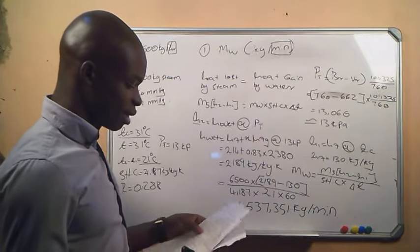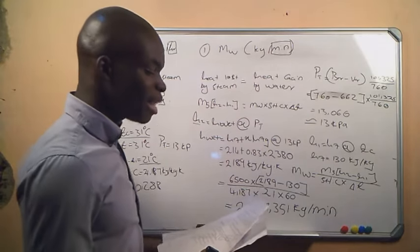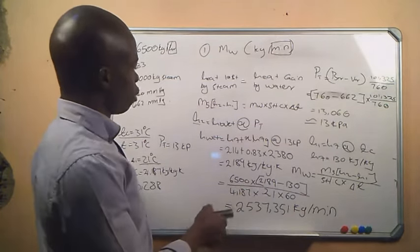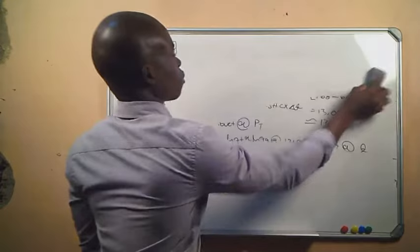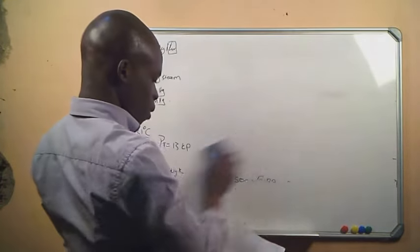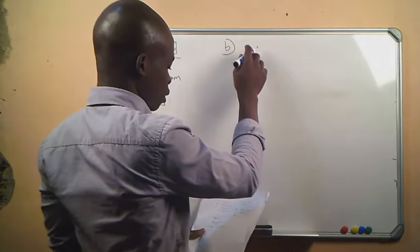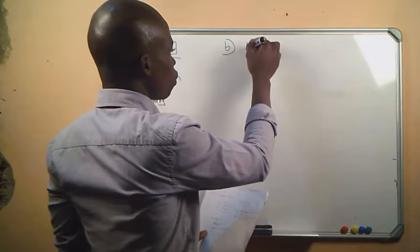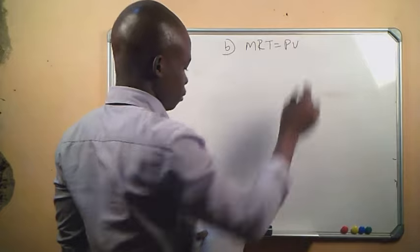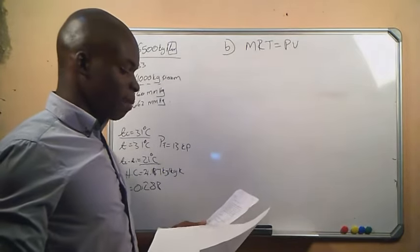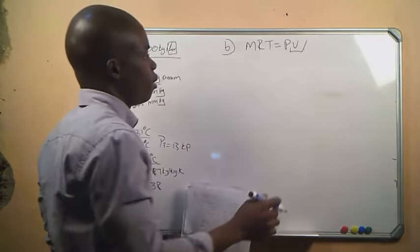Question number two says: calculate the capacity of the air pump in cubic meters per minute. When dealing with air, we use the ideal gas equation: MRT equals PV. We are looking for V.